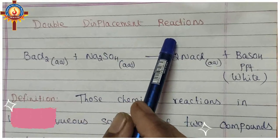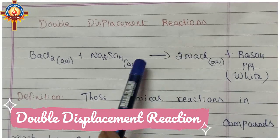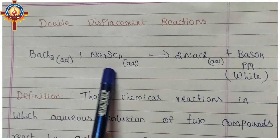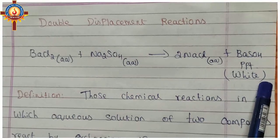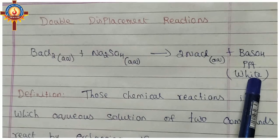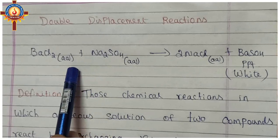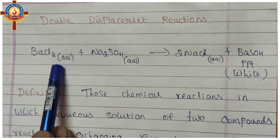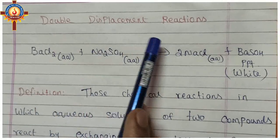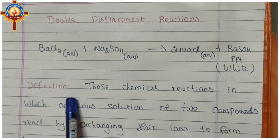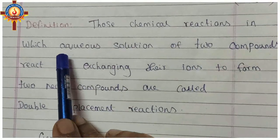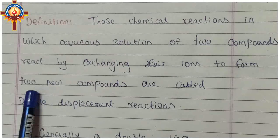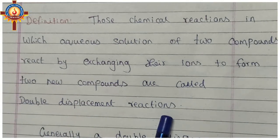The next type of chemical reaction is double displacement reaction. We already studied the reaction between aqueous solution of barium chloride and sodium sulfate, where a white precipitate of barium sulfate is obtained. This happens due to the exchange of ions. Since two chemical species are displaced, it is called a double displacement reaction. The definition: chemical reactions in which aqueous solutions of two compounds react by exchanging their ions to form two new compounds.